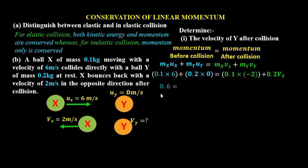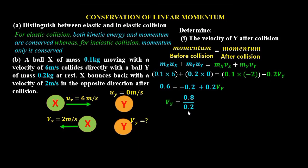On the left-hand side, 0.1 times 6 gives 0.6, and 0.2 times 0 is 0, so we have 0.6. On the right-hand side, 0.1 times negative 2 gives negative 0.2, plus 0.2 Vy. Rearranging, negative 0.2 crosses over and we divide both sides by 0.2, giving Vy equals 0.8 over 0.2, which works out to Vy equals 4 meters per second — the velocity of Y after collision.